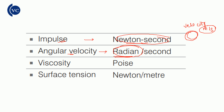Viscosity is very important — the unit of viscosity is Poise. Surface tension — the unit is Newton per meter. The formula for surface tension is force divided by distance, giving Newton per meter.